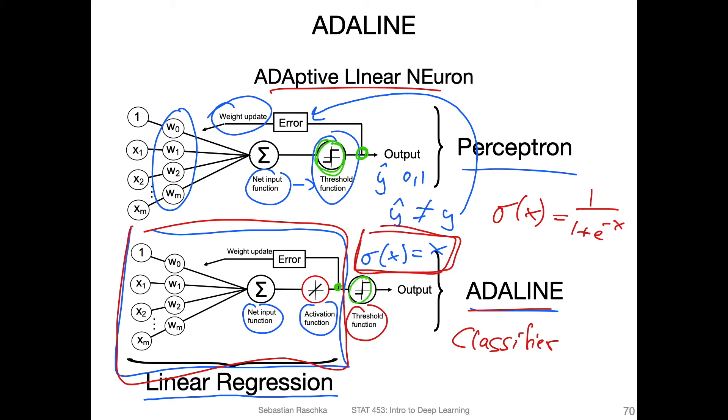Here we don't have the problem that things are not differentiable, because we compute it before the threshold function. The threshold function still is not differentiable, but we don't worry about that because we compute the gradients before that. So in that way, it's not a hindrance. It will become more clear when I show you the code example.